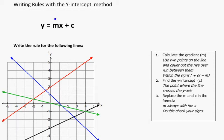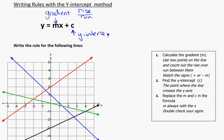Just a quick reminder: m is our gradient, and that's always found using our rise over our run. And c is our y-intercept, which we can find by looking at the graph to see where the line crosses the y-axis.